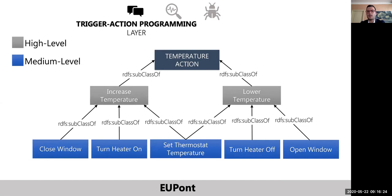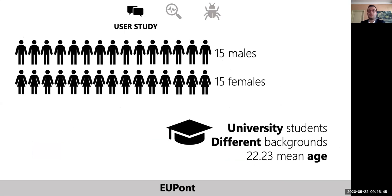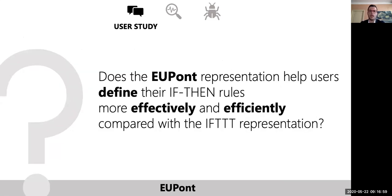Actions can also be defined at high and medium level. The graph shows some temperature-related actions. Increase temperature and lower temperature are two high-level actions that can be reproduced in different ways, while medium-level actions refer to specific devices such as thermostats and windows. We conducted a user study to evaluate the effectiveness and understandability of the EUPont model in the definition of if-then rules, involving 30 university students coming from different backgrounds.